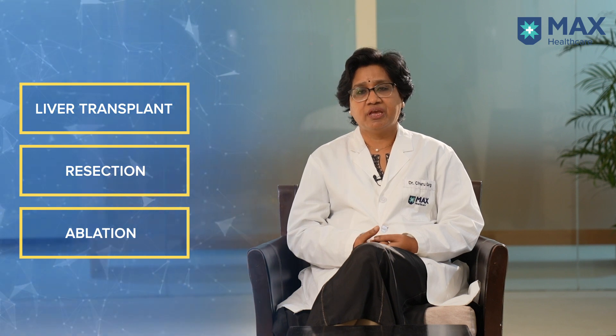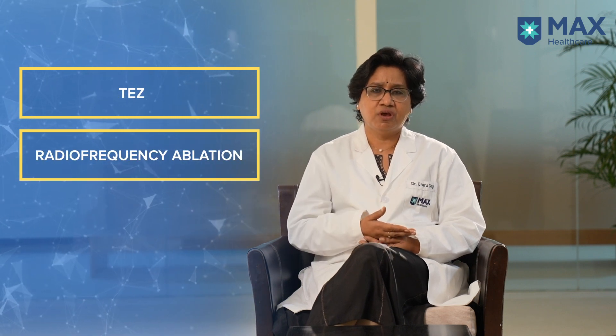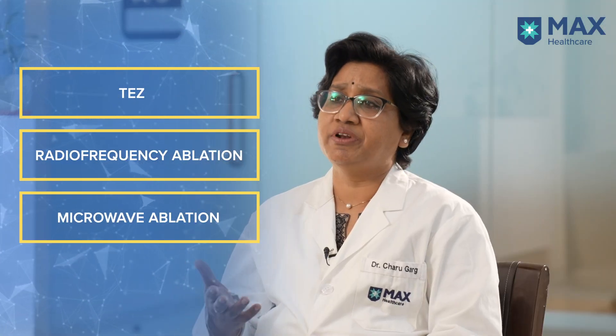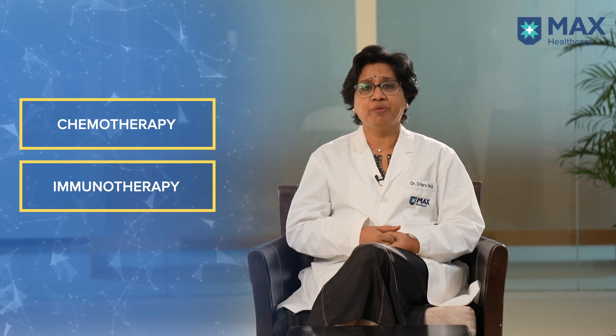Early stage liver cancers are treated by liver transplant, resection or ablation. In intermediate and advanced stages there are many options like TACE, radiofrequency ablation, microwave ablation, radiation therapy and then we have systemic therapy in the form of chemotherapy or immunotherapy.